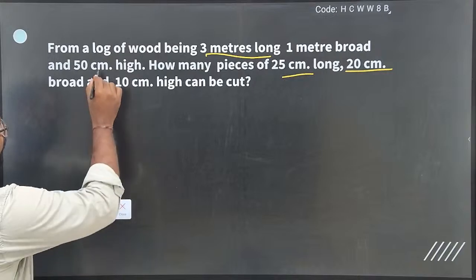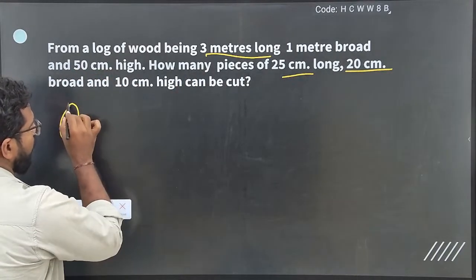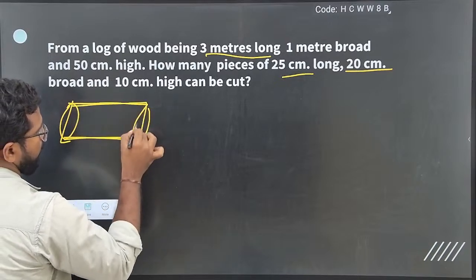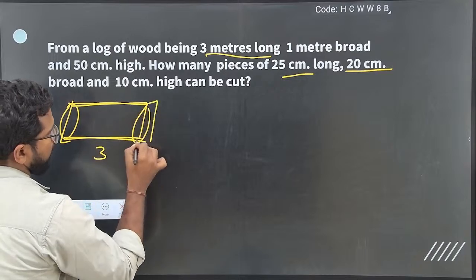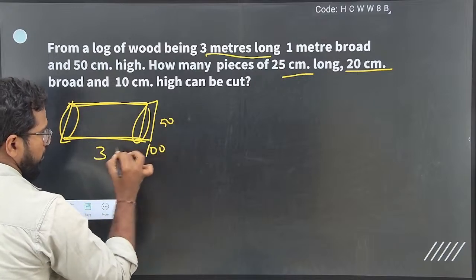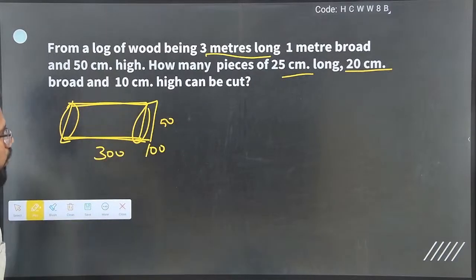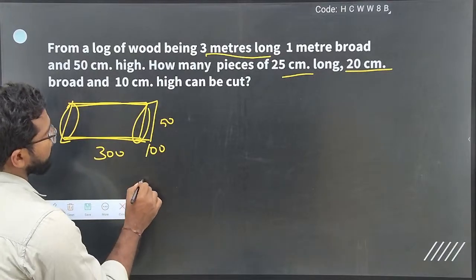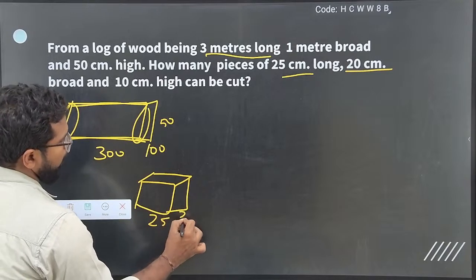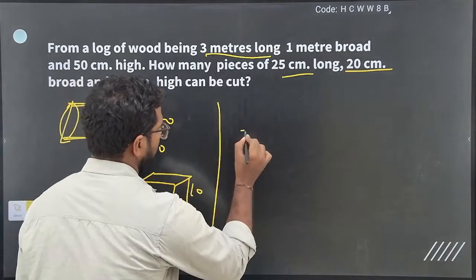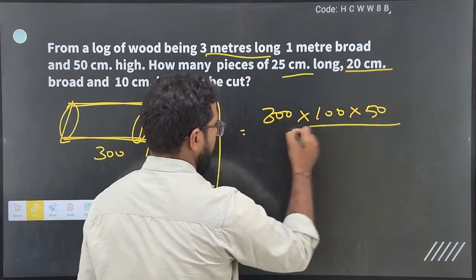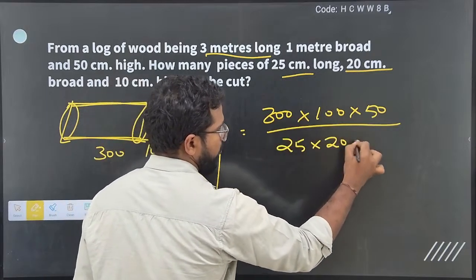The bigger one here is the log of wood, assuming it to be a cuboidal structure. The log is 3 meters long, breadth 1 meter, and height 50 centimeter. Converting: 300 × 100 × 50. The small pieces of cuboid are 25 × 20 × 10. So, bigger volume: 300 × 100 × 50 divided by 25 × 20 × 10.